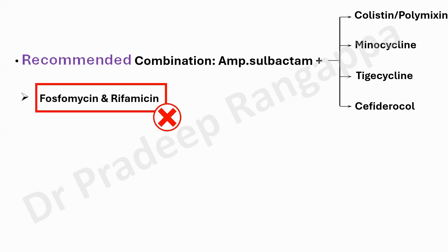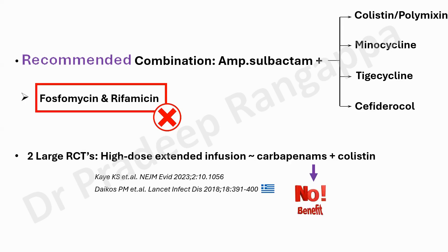Previously we used high-dose colistin with carbapenem as a combination for Acinetobacter. There were two large RCTs that showed high-dose extended infusion of carbapenems along with colistin — which we were traditionally using — did not show any benefit. The whole principle now is to add sulbactam mandatorily. Even high-dose colistin up to 9 million units with carbapenems showed no clinical benefit. Between tigecycline and minocycline, minocycline is more desirable.